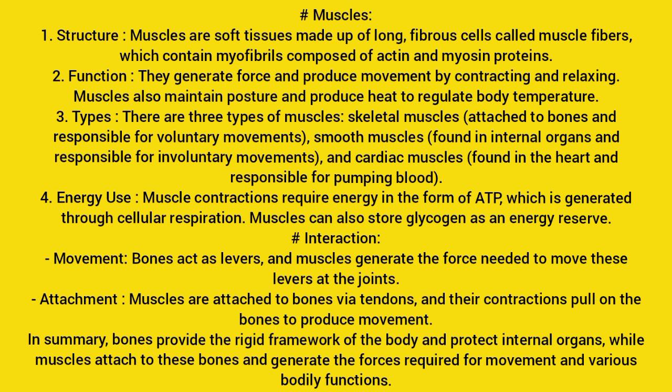Types: there are three types of muscles — skeletal muscles, attached to bones and responsible for voluntary movements; smooth muscles, found in internal organs and responsible for involuntary movements; and cardiac muscles, found in the heart and responsible for pumping blood. Energy use: muscle contractions require energy in the form of ATP, generated through cellular respiration; muscles can also store glycogen as an energy reserve.